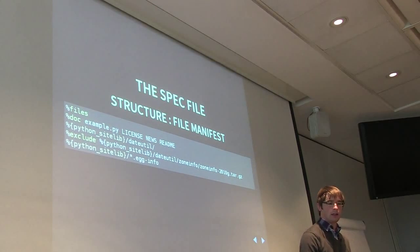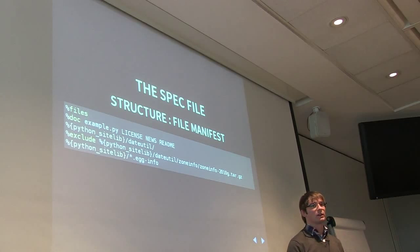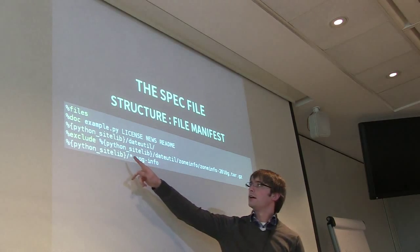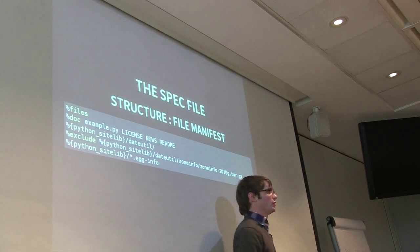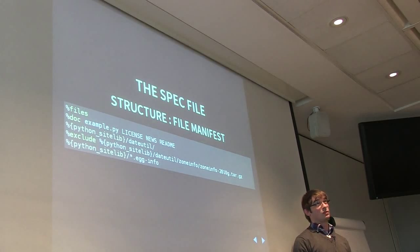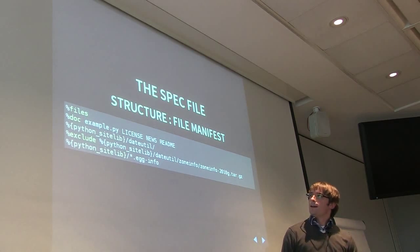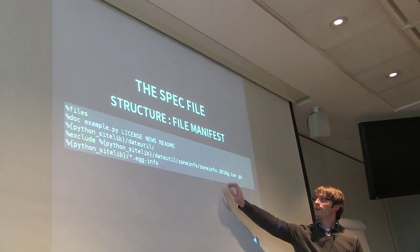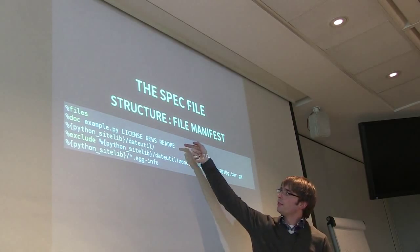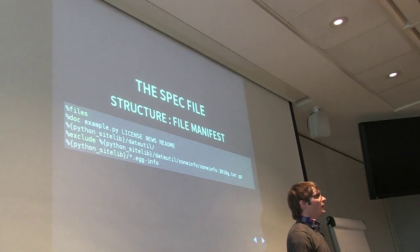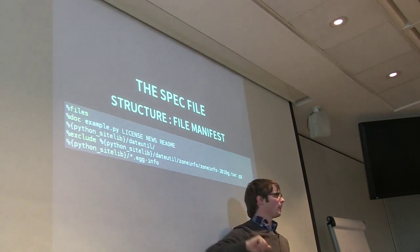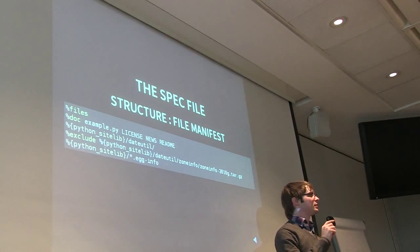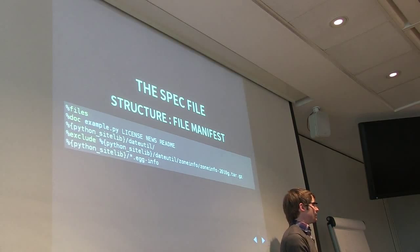Finally, in the spec file you're going to see the files manifest. This is a list of everything that's going to go in the target file system on those machines. You see right here there's a dateutil directory in python_sitelib, which is usually usr/lib/python/site-packages. Everything under this directory is going to get included in this package. We're going to exclude one particular file out of there. The doc line is important because these files are in the source tarball and it's going to put them in the correct system documentation directory - good for things like readmes, changelogs, and the license file.